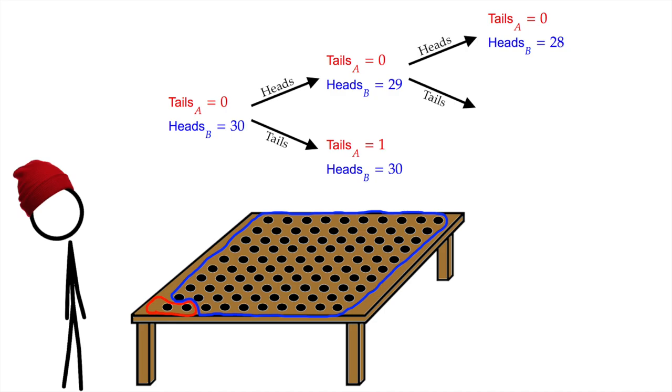Case two, first coin was heads, second coin was tails. This time, tails in A increases by 1, and heads in B stays at 29.